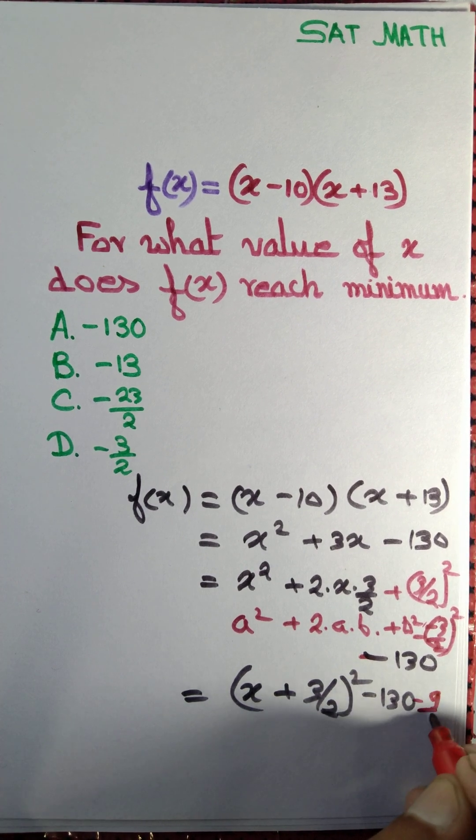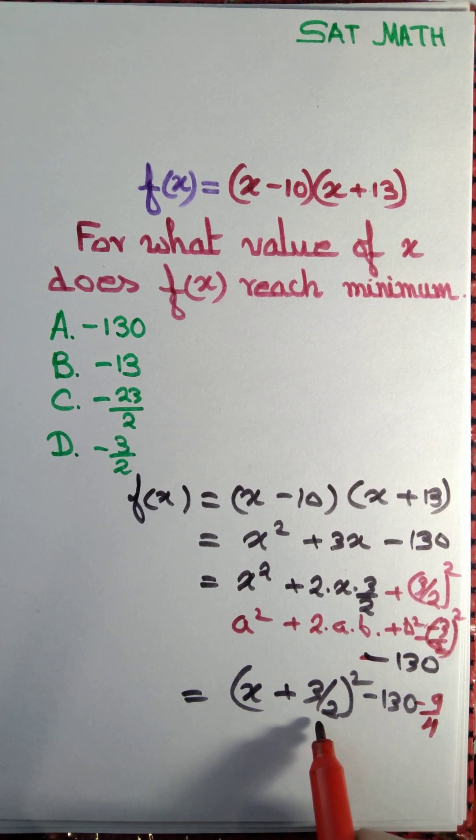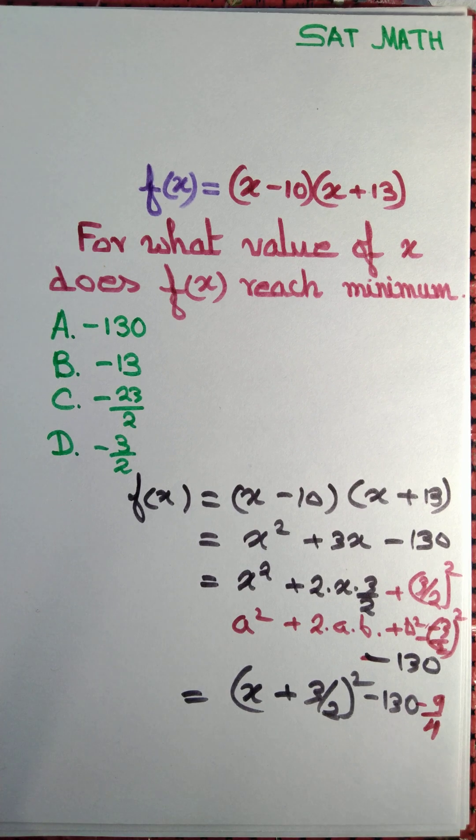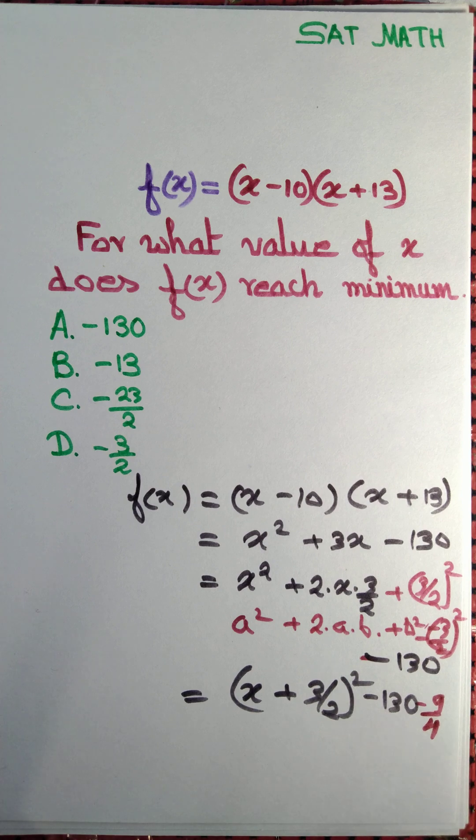Now when is it that this expression is minimum? (x + 3/2)² is either a positive quantity or 0, so at the minimum it can be 0. So f(x) is minimum when x equals -3/2. The correct option is option D.